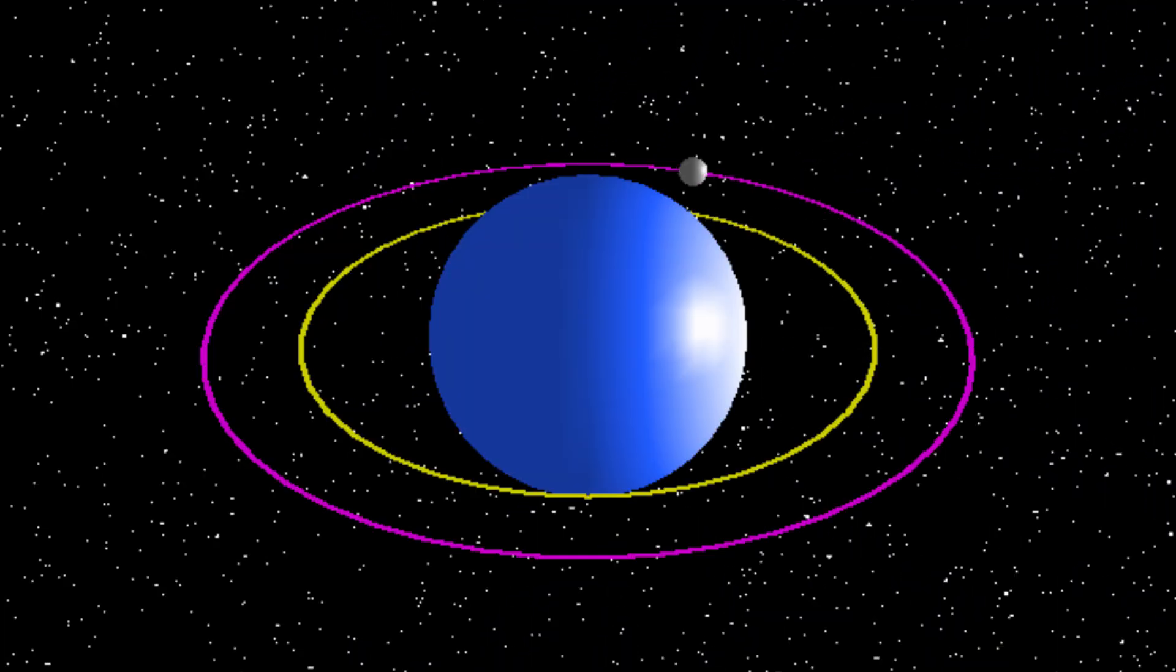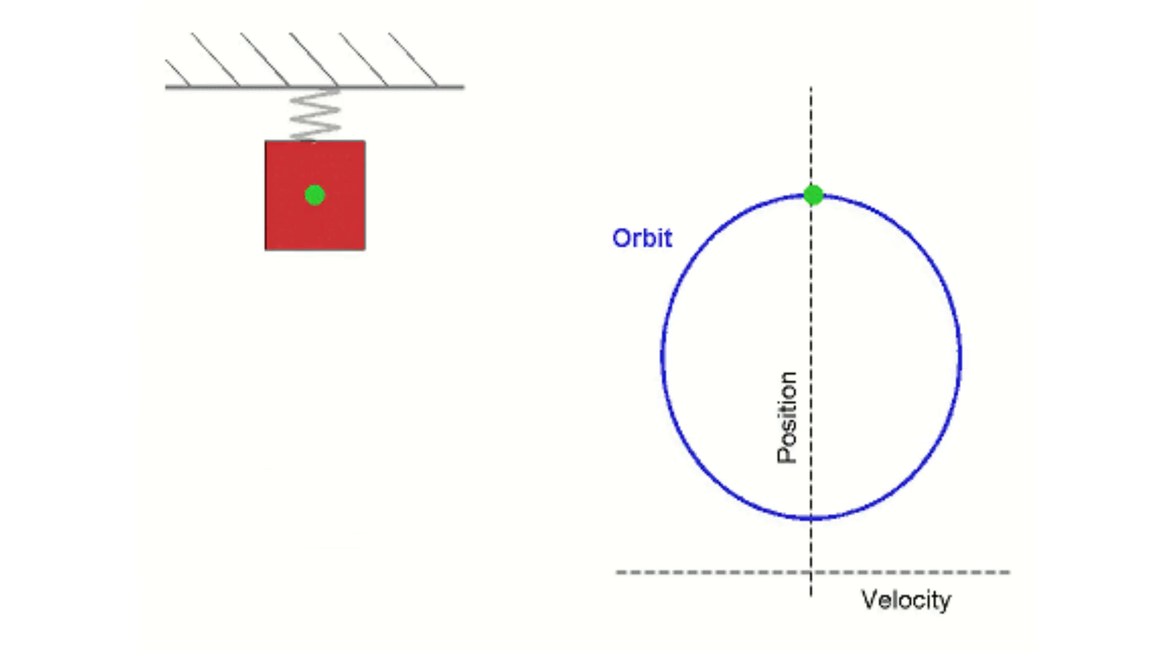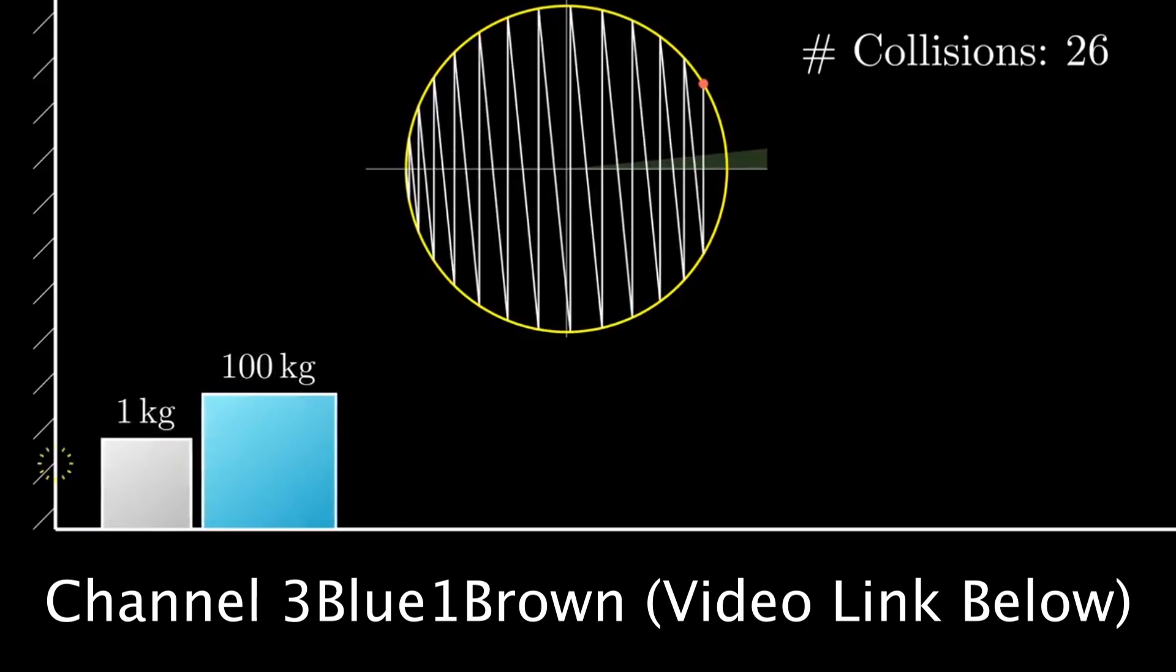But as he says, pi shows up in all these scenarios because there is in fact a circle somewhere within the problem. Sometimes it's obvious, other times you need to dig a little, and other times a lot. So for these examples, see if you can spot the circle. For most of them, I could not, but we're going to start off with one that I can explain, which is known as Buffon's Needle.